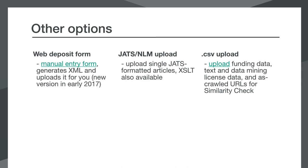Some of our members have systems that produce JATS or NLM XML, and we have written a transformation tool for that. Using the web deposit form, you can upload JATS or NLM formatted files article by article, and we will convert those to Crossref XML and deposit them in our system. If you want to add to your existing metadata records by adding license or funding information, we can take that information in a CSV file and upload it so that it can be added to your existing deposits. You can also deposit full text links to your content using that form if you're interested in participating in our similarity check service.